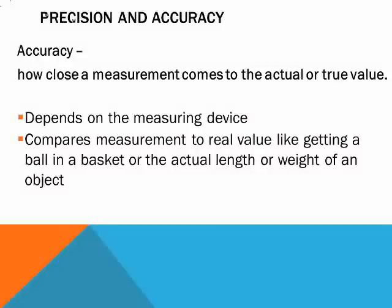Precision and accuracy. Accuracy is how close a measurement comes to the actual or true value. That's what accuracy is, and we are always shooting for accuracy and precision, which we'll talk about in a second.